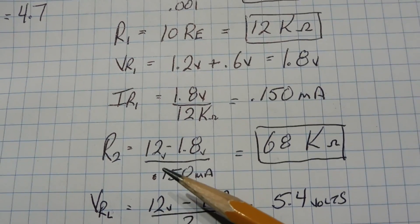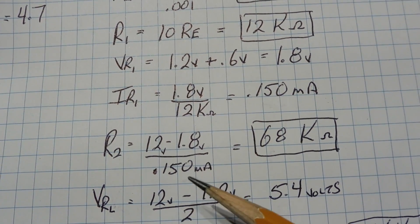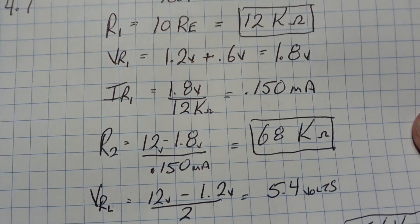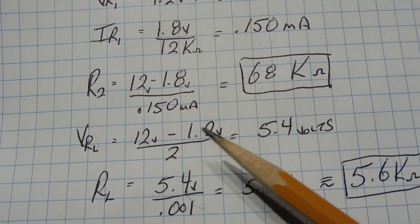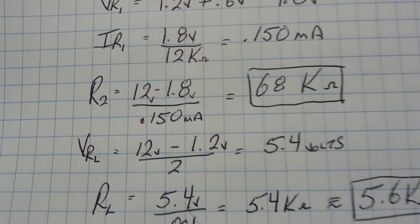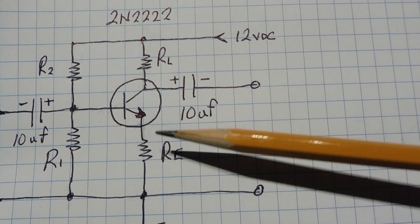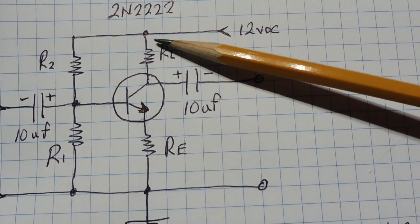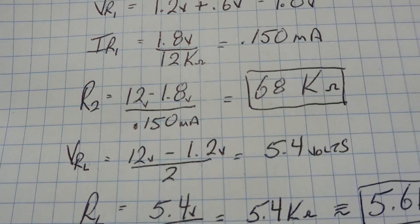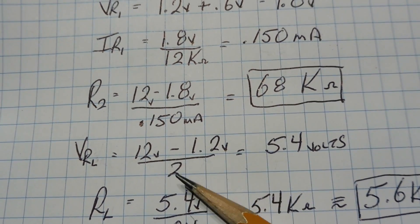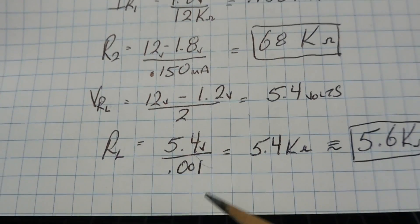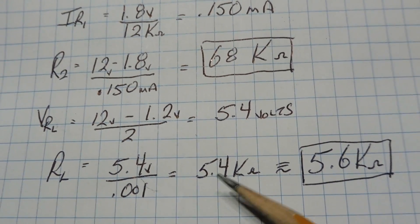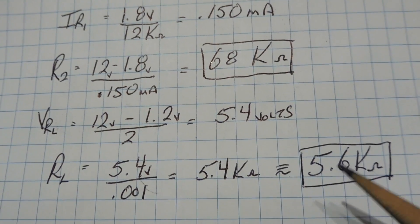Now the voltage across R2 is 12 volts minus 1.8 volts, and if we divide it by 150 microamps, we'll get a resistor of 68K. So now we know the value of R2. Now the voltage drop across the load resistor will be 12 volts minus 1.2 volts, so we'll have 10.8 volts. We want to share that voltage between the transistor and the resistor, so we'll split that in half. So 12 volts minus 1.2 volts divided by 2 gives us 5.4 volts across RL. 5.4 volts divided by 1 milliamp gives us 5.4K, and that's not a preferred value so we'll use 5.6K. So those are our four resistors.